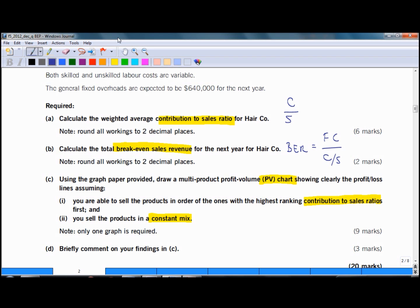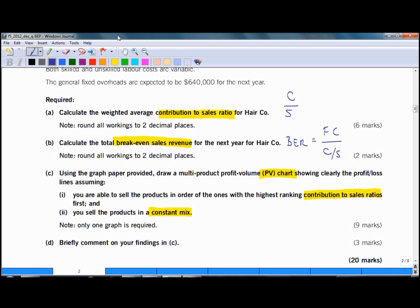In part C you need to draw a profit volume chart. It will have two axes. On one you will have profit and on the other one volume. Here we will put profit and here we will put volume which will be represented by dollars of sales. If you don't sell anything you will still have some fixed costs. That means with zero sales you will have negative profit.